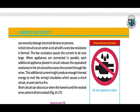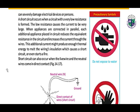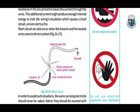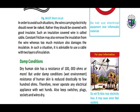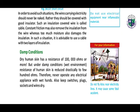This results in a short circuit, which can be dangerous for electrical devices and persons. A short circuit occurs when a circuit with a very low resistance is formed. The low resistance causes the current to be very large. When appliances are connected in parallel, each additional appliance reduces the equivalent resistance and increases the current through the wires. This additional current might produce enough thermal energy to melt the wiring insulation, causing a short circuit. Short circuit can also occur when the live wire and the neutral wire come in contact. In order to avoid such conditions, the wires carrying electricity should never be naked — they should be covered with a good insulator. Such an insulator-covered wire is called a cable.